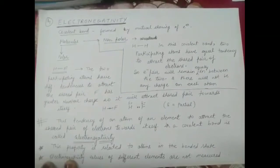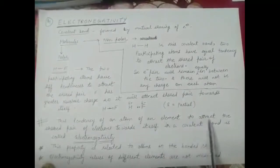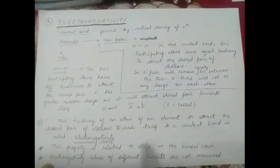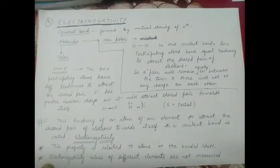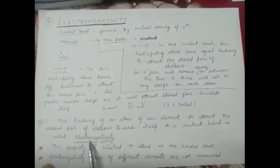Polarity depends upon the tendency of an atom to attract the shared electrons. This tendency of an atom to attract the shared pair of electrons towards itself in a covalent bond is known as electronegativity. So electronegativity is the property of an atom by which it can attract the shared pair of electrons towards itself.